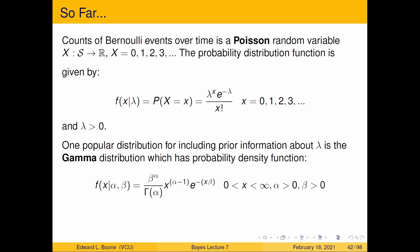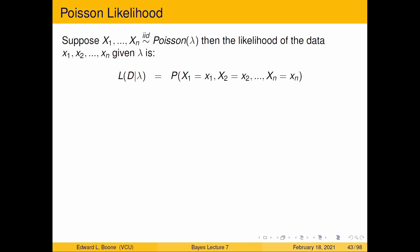Let's start putting this together. As we've discussed, you need a prior and a likelihood to get a posterior. For the Poisson, the likelihood of the data given lambda is the probability that we would observe this data. The data are given by the lowercase x's — so the probability that random variable X1 equals little x1, X2 equals little x2, and so on.